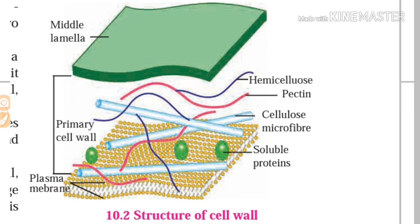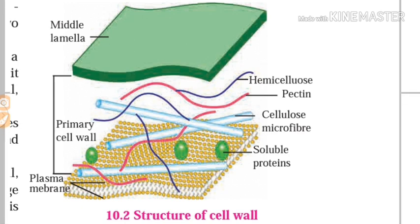The plasma membrane or cell membrane is a thin, fragile, and elastic covering that separates the cell components from the outer environment. The structure of the plasma membrane consists of protein molecules embedded in a layer of phospholipids. The plasma membrane is said to be selectively permeable, as it allows some substances to enter while preventing others.